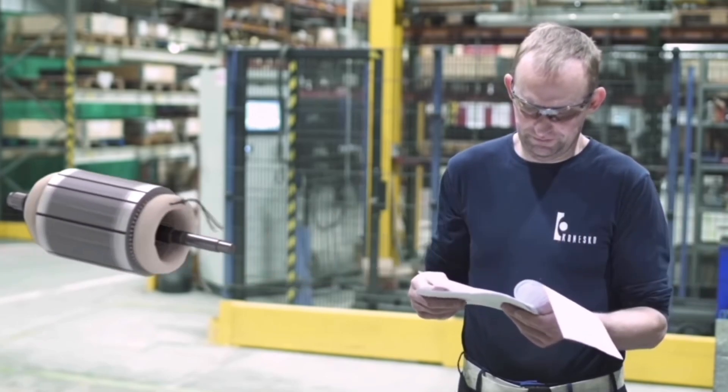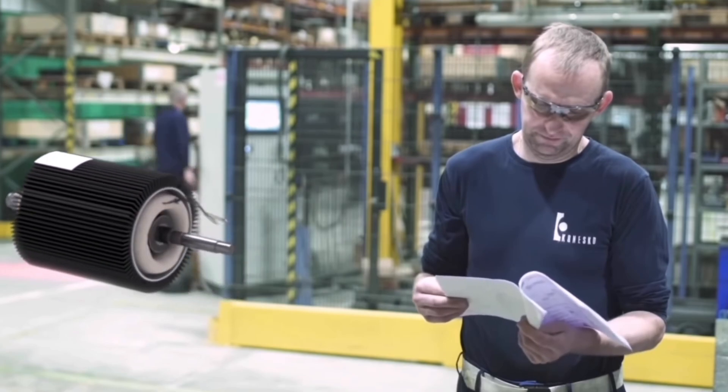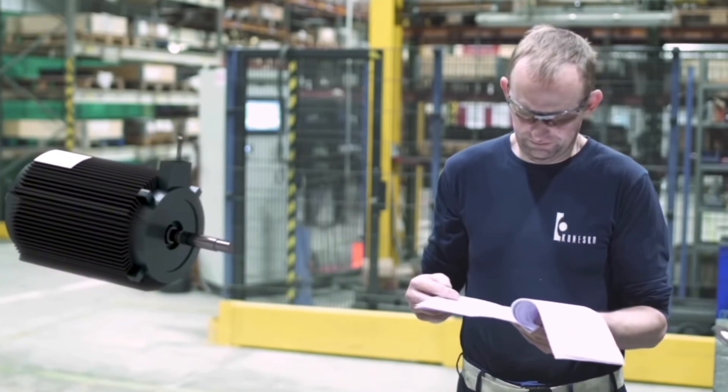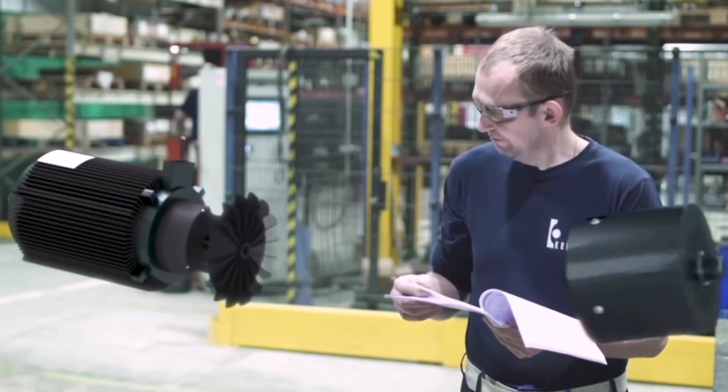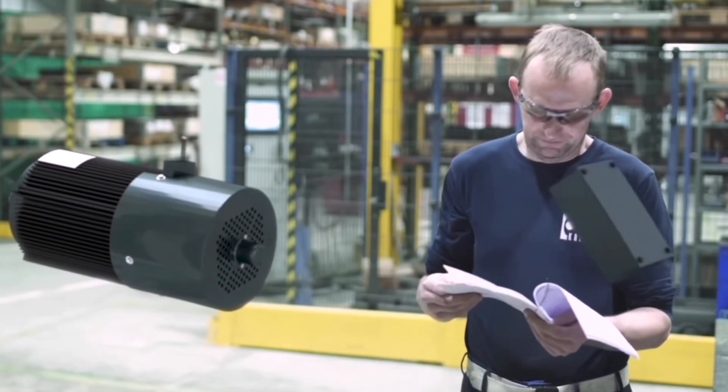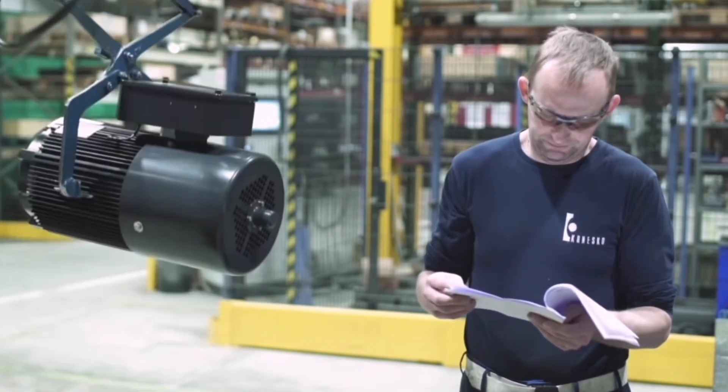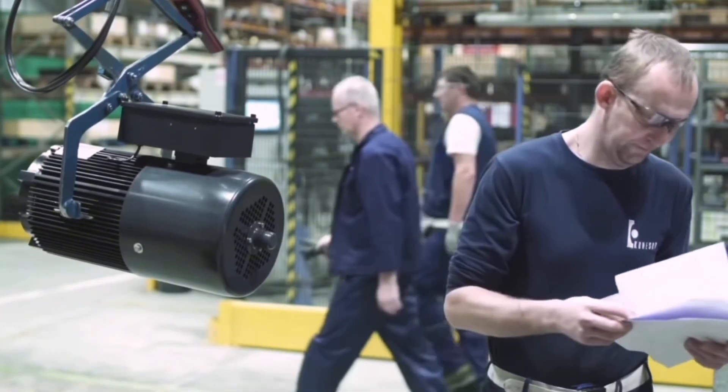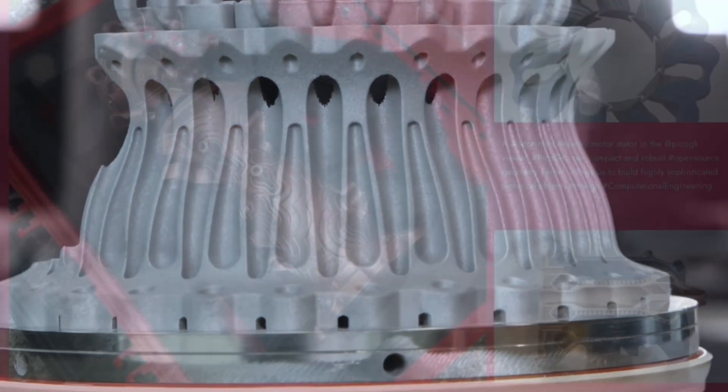Speaking of robotics, AI is revolutionizing how motors and components are designed for advanced robotic systems. In robotics, precision and adaptability are critical. AI enables the creation of motors that can deliver precise movement, handle complex tasks, and adapt to changing environments. For example, in humanoid robots, AI designs motors that mimic human joint movements, allowing for smoother and more natural motions.